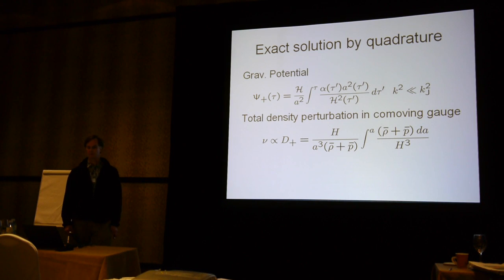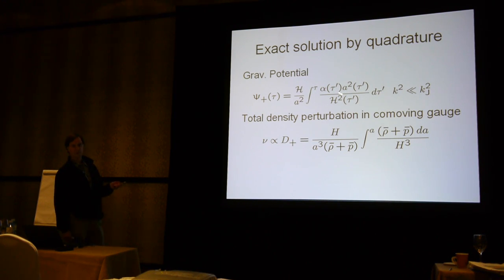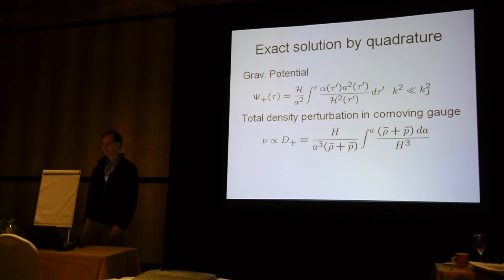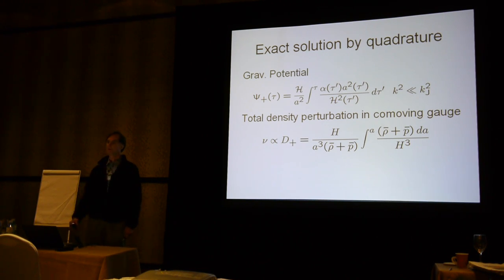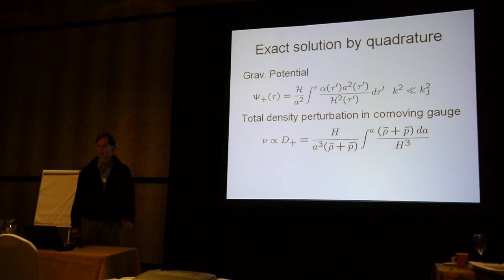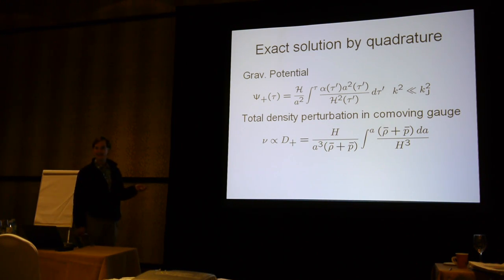I presented in the first lecture a general solution, in the limit of long wavelengths, for the metric potentials or perturbations. These can be written in terms of the expansion history and the composition. The expansion history enters through a(τ) and its logarithmic derivative with respect to conformal time. The composition is implicit in the function α, which is proportional to (1+w) times the background density. So if we know the background evolution of the universe, we know how long-wavelength density and gravitational potential perturbations evolve — they are related by the Poisson equation. This is the so-called growing mode of density perturbations for any background.